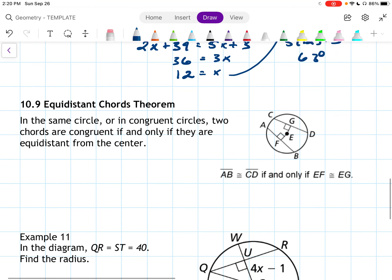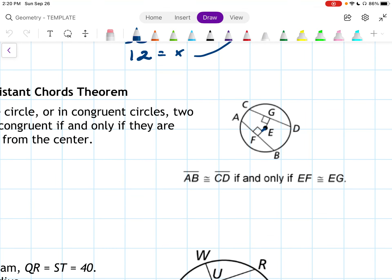10.9, the equidistant chords theorem. In the same circle or in congruent circles, two chords are congruent if and only if they are equidistant from the center. So what that's saying there, we have the beginning of a radius here and here, and then we have chords AB and chord CD. And it says that segment AB is congruent to segment CD if and only if EF is congruent to EG. And EF and EG are both pieces of a radius, not the whole radius but little pieces of them.